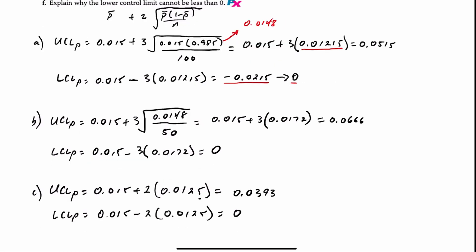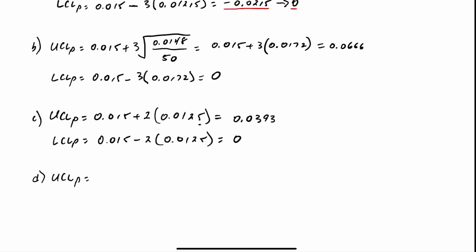For requirement D, sample size of 50 and 2 sigma. UCL is equal to 0.015 plus 2 sigma. Now we can go back to what we had in requirement B, 0.0172. And that would give us an upper control limit of 0.0494.